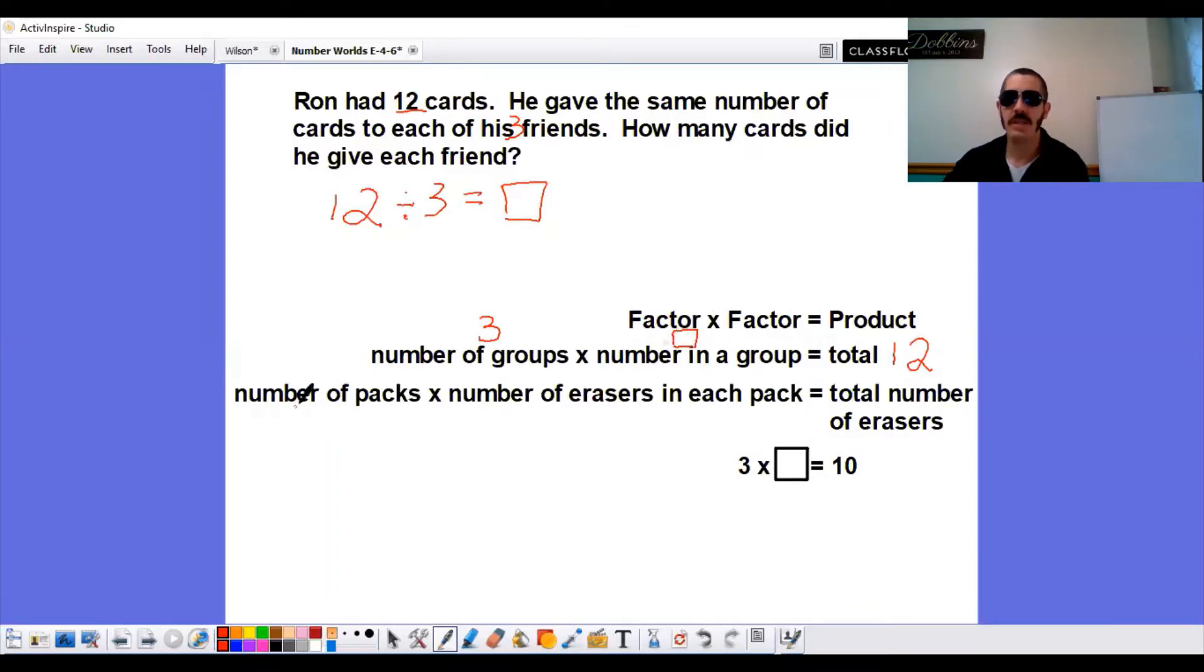What we don't know is the number in a group. And this will change. So this is back from that previous problem. This first part is the number of no longer packs, but friends. And we're not taking that with the number of erasers, but the number of cards each friend gets.